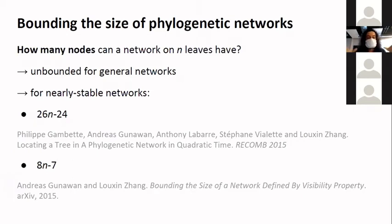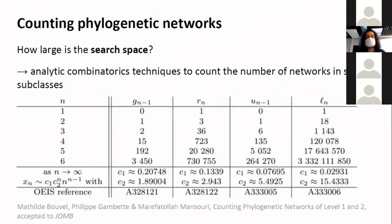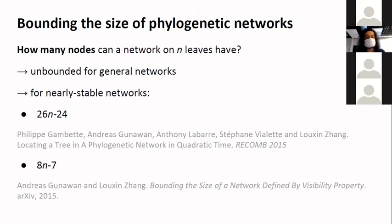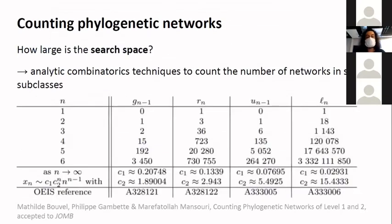This is not true for some of the restrictions we found — and this was a key point in 2015 to prove our results on tree containment. We proved that on some of those classes we could bound the number of nodes in the network, meaning the network cannot be too large. This is the first tool we can really use for algorithms — bounding the size of our objects. And counting, for example, those level-two networks: there are three billion of them with only six leaves, which is a bigger number than trees.